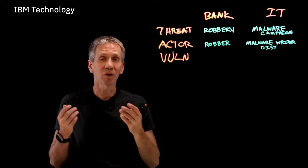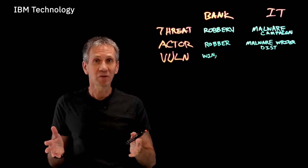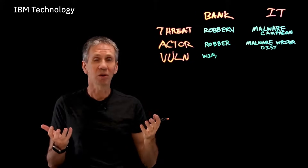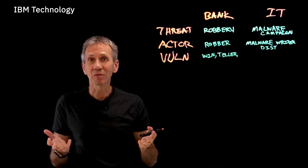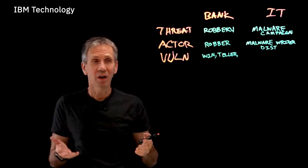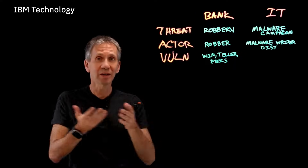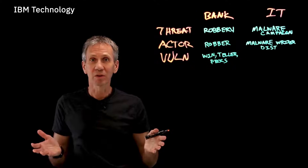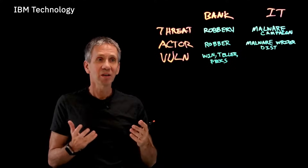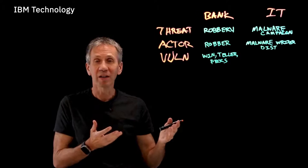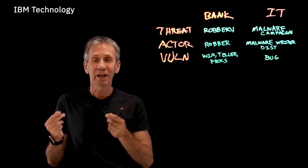Next, consider vulnerabilities — weaknesses in the system. In a bank, windows are made of glass, and glass is weak. The tellers themselves could be threatened to hand over money. Procedures are also a vulnerability: when the money truck arrives, is the path from the truck to the vault properly secured? In IT, a malware campaign likely exploits a bug — a vulnerability introduced in the software itself.